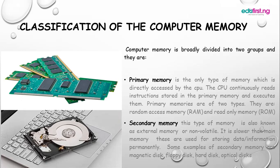Primary memories are divided into two: we have the random access memory (RAM) and the read-only memory (ROM). In the random access memory, data can be stored temporarily. RAM is also called volatile memory because when power fails, the data from the RAM will be erased.